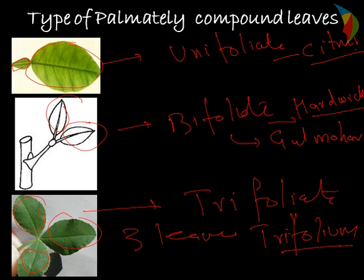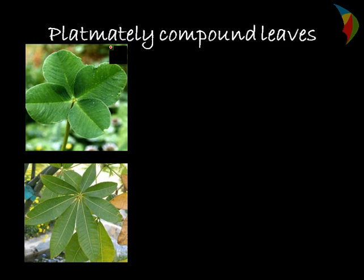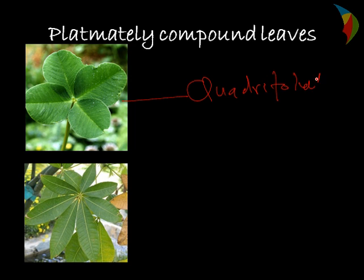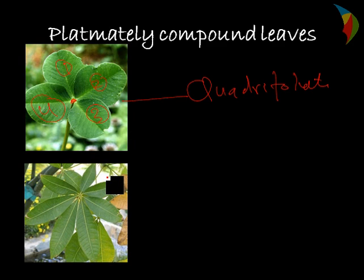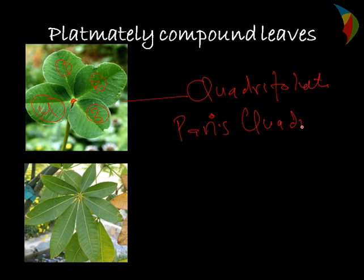So these are three types of palmately compound leaves. The fourth type is quadrifoliate — quadra means four. In quadrifoliate palmately compound leaves, you can see one, two, three, four leaves coming out on the tip. The common example is Paris quadrifolia.